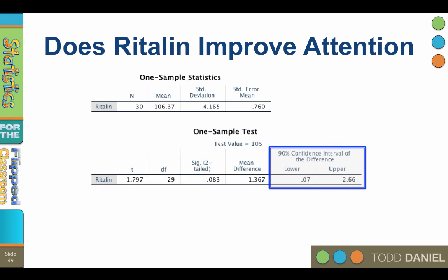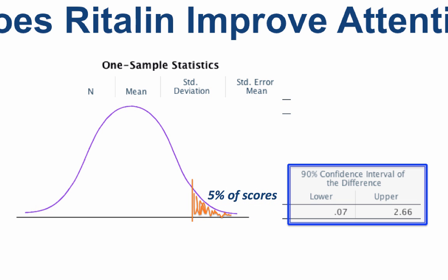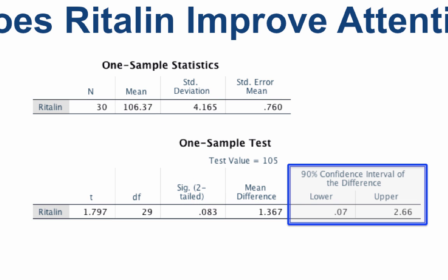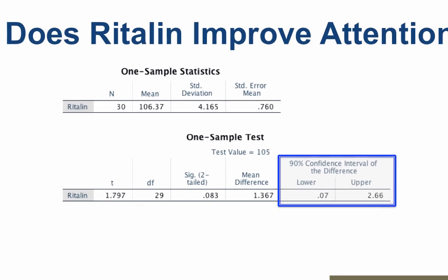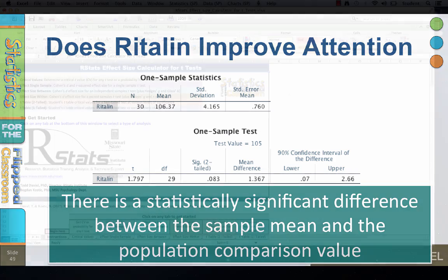Furthermore, remember that we asked for a 90% confidence interval for this one-tailed test, because we have to put all 5% of our p equals 0.05 on one end of the distribution. So we can interpret the confidence interval and see that it does not cross zero. All three of these findings tell us the same thing. There is a statistically significant difference between the sample mean and the population comparison value. Reject the null hypothesis that says no difference between sample and population.